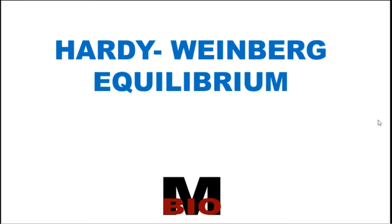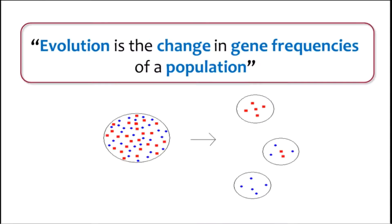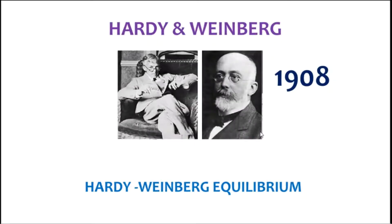Welcome to MBio. In this session we are going to analyze Hardy-Weinberg Equilibrium, which is a core concept in population genetics. According to modern evolutionary biology, evolution is the change in gene frequencies or allelic frequencies of a population. So if we want to analyze whether a population is undergoing evolution or not, we must first calculate the allelic frequencies or gene frequencies in order to assess the evolutionary transformations of populations through the estimation of allelic frequencies.